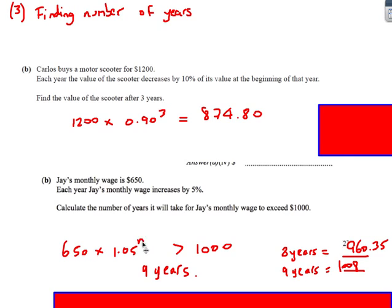The simple method will simply be to stick numbers on your calculator and see what happens. Now, basically if I stick in an 8 here, I'm going to get 960.35. If I stick a 9 in here, I'm going to get 1,008. So there we go. The number of years that it will take Jay's monthly wage to exceed 1,000 will be 9 years. If you want to make sure you get full method marks on this, write down this step here and actually write down the 8-year answer and the 9-year answer to show that you've actually done the method and not just guessed a number. Okay, so there we go.